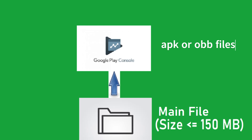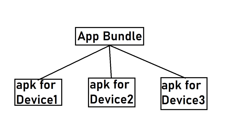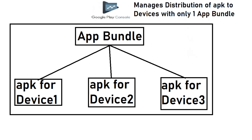Google Play uses Android app bundles to generate and deliver APKs that are optimized for each device configuration, providing users with more efficient apps. This means you only need to build, sign, and upload a single app bundle to support optimized APKs for a wide variety of device configurations. Google Play then manages and serves your app's distribution APKs for you.